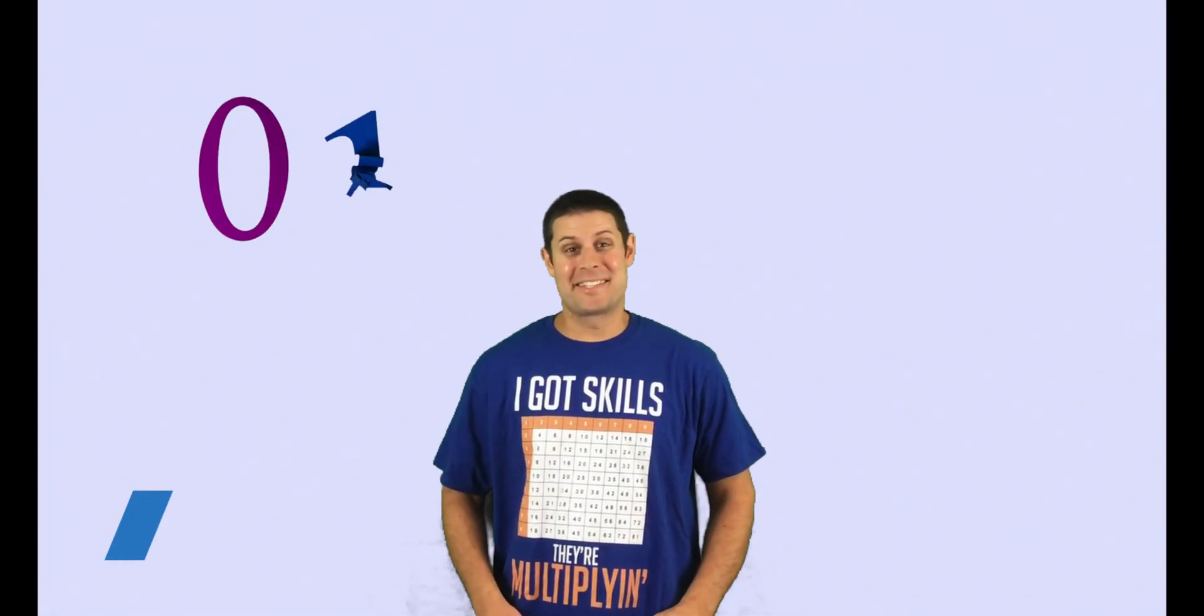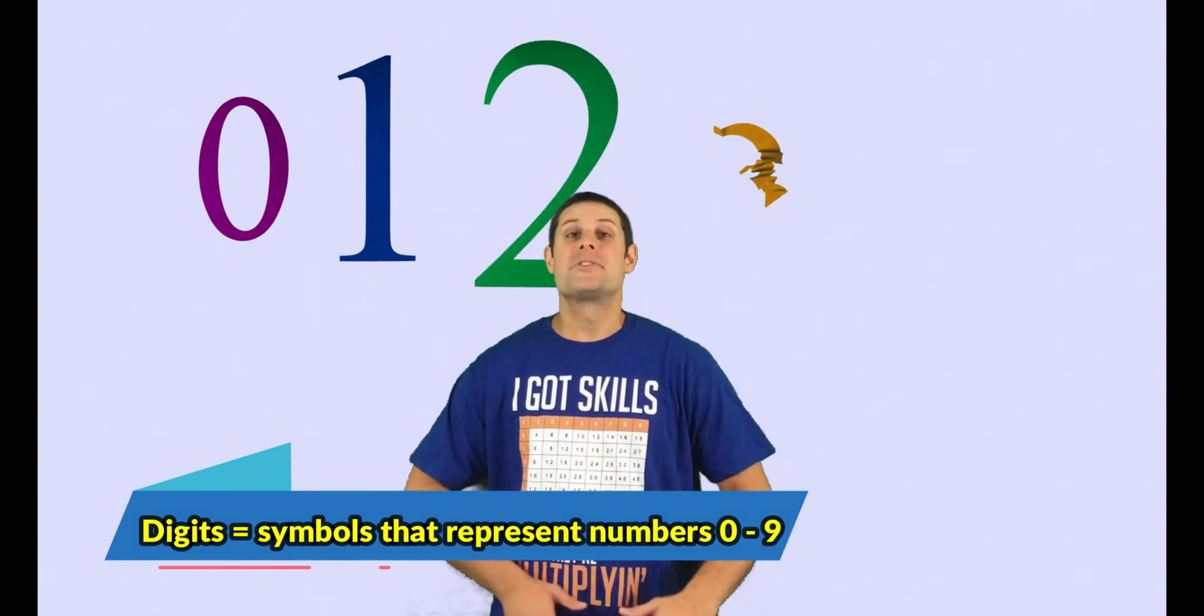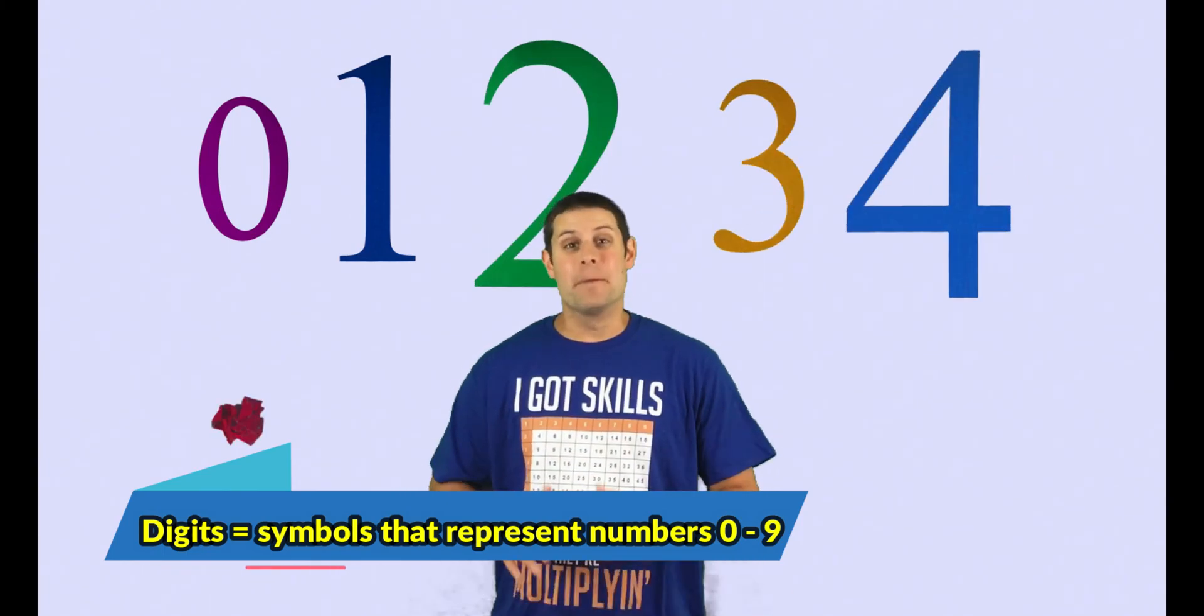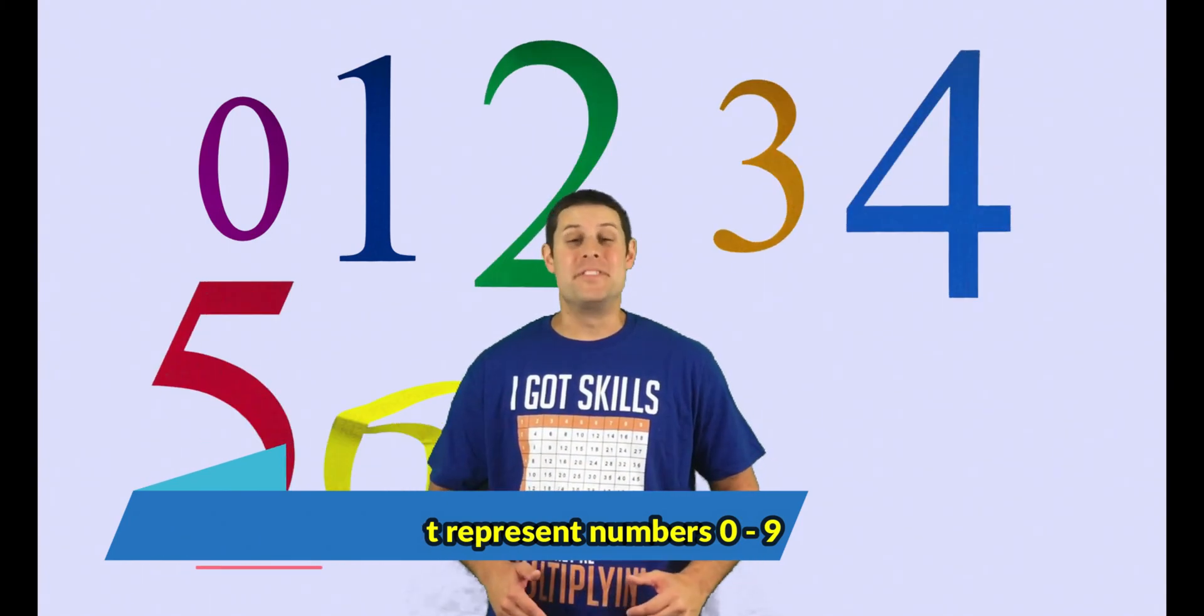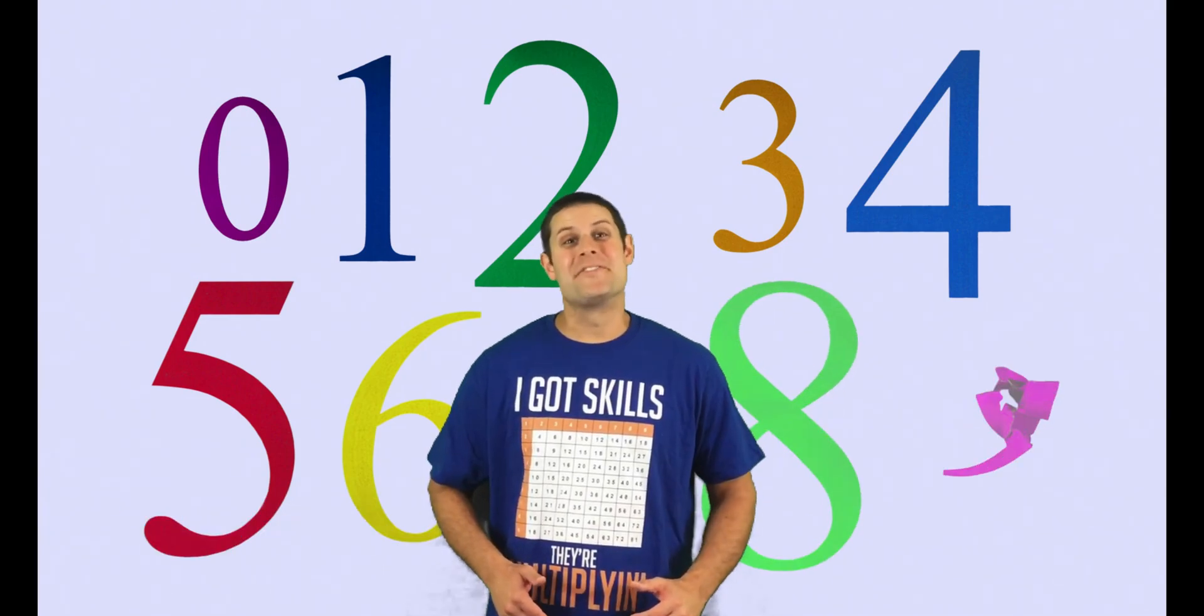Let's start by talking about digits. Digits are whole numbers starting with 0 all the way up to 9. The number of digits that a number has helps determine its value.